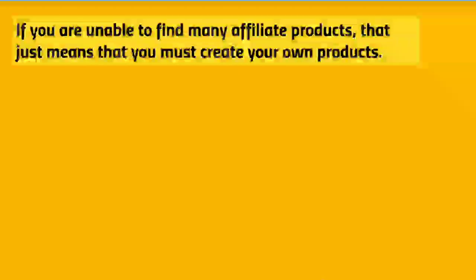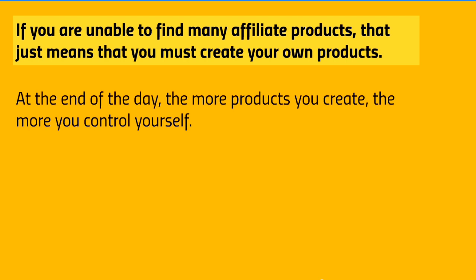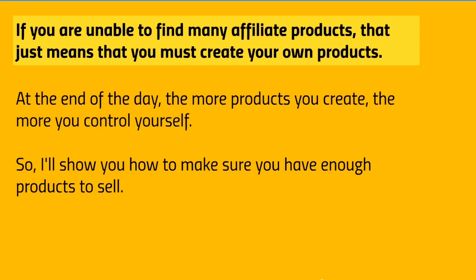Finding affiliate products is great and lets you focus on your blog, but if you can't find many affiliate products, you'll need to create your own or find private label rights products. At the end of the day, the more products you create and own, the more control you have. If you have five different products, you can cross-sell them. If somebody buys product one, you can present them products two through five. If they like you and your products, they're more likely to buy the others.